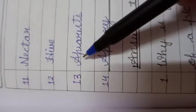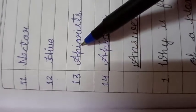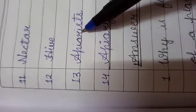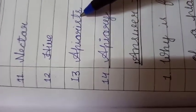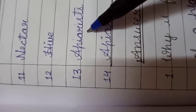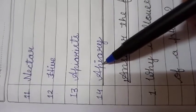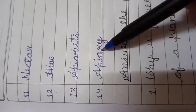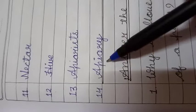Thirteenth word is apiarists, A-P-I-A-R-I-S-T-S, apiarists. Fourteenth word is apiary, A-P-I-A-R-Y, apiary.